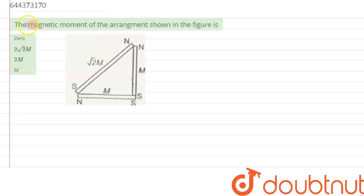The question says: the magnetic moment of the arrangement shown in the figure is... So we have to calculate the resultant magnetic moment of the arrangement as shown in the figure. So we know about magnetic moment, we can say...